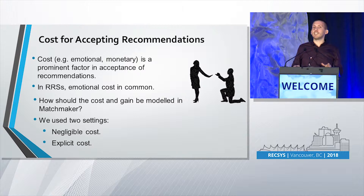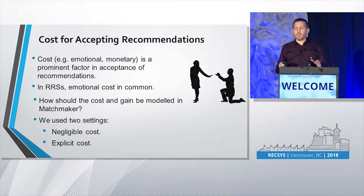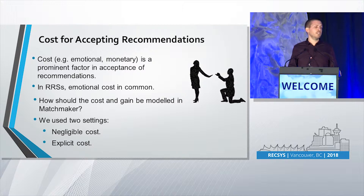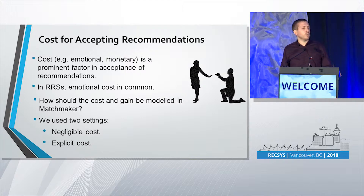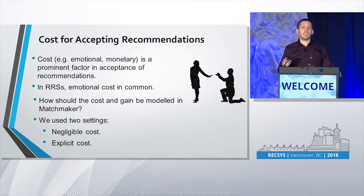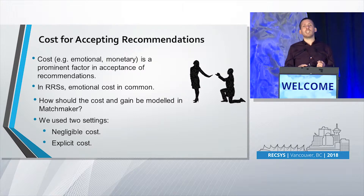We decided to create two different settings. In the first setting, because this emotional cost is very different among different users, we made one setting with negligible cost — users weren't required to pay any significant cost when accepting recommendations. In the second setting, which we called explicit cost, we imposed a monetary cost, which aimed to simulate the emotional cost involved in accepting a recommendation, and there was also gain and cost available.